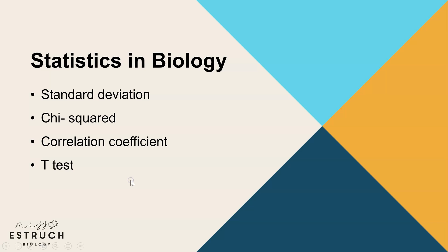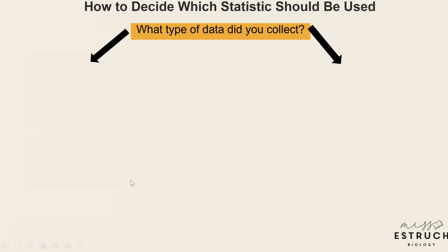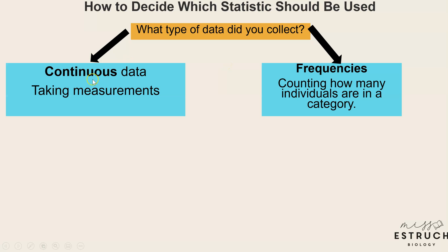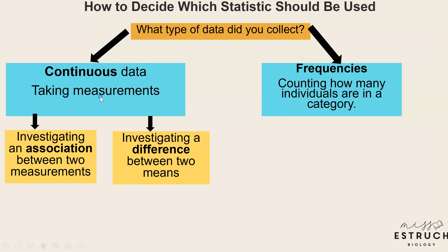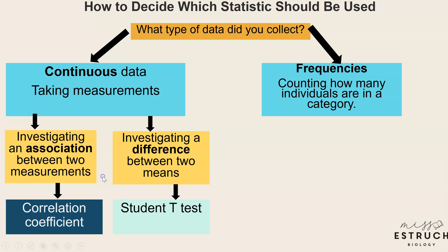Just a recap on how to know which statistic to use — it depends on which type of data you collect. Data can either be categorized as continuous, so that would be something like height because it can be any value on a scale, or the alternative is frequencies, when you count how many individuals fit into a category. For continuous data it could be investigating an association between two measurements, or investigating a difference between two means.